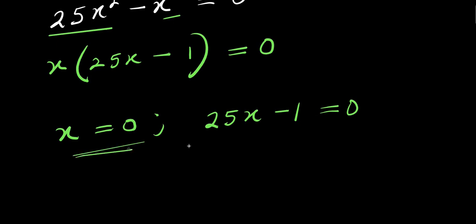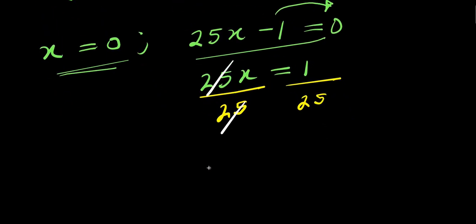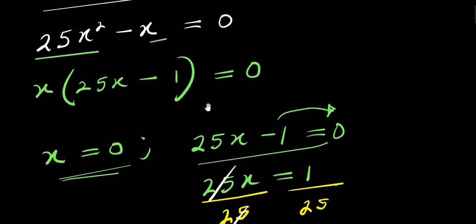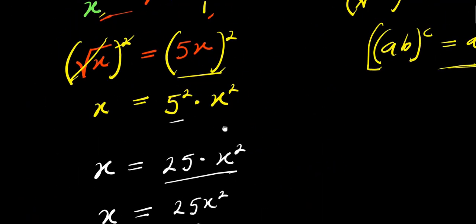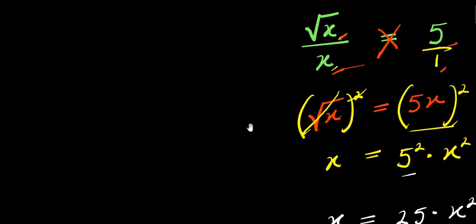At this point, we can have x equals 0, or 25x minus 1 equals 0. If x equals 0, that's already solved. For the second case, we move the negative 1 over: 25x equals 1. Dividing both sides by 25, we get x equals 1 over 25. So in this first method we have two solutions: x equals 0 and x equals 1/25.